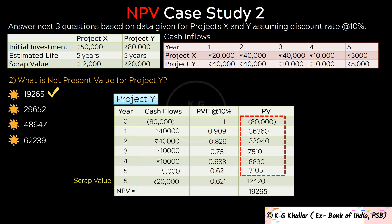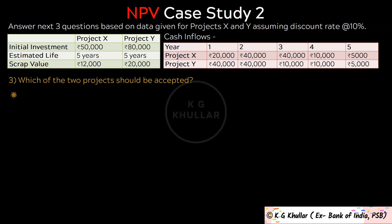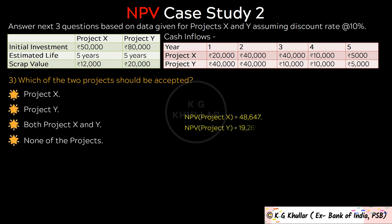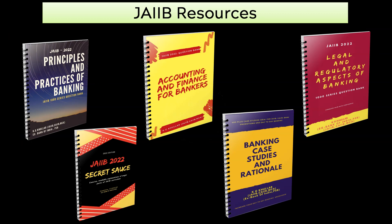Finally, which of the two projects should be accepted? We will select the project with the highest NPV. NPV for project X is Rs. 48,647 and NPV for project Y is Rs. 19,265. So we select project X. The correct option is A. With this we wind up the lecture — I hope the concept of NPV and all the questions and case scenarios are clear to you.